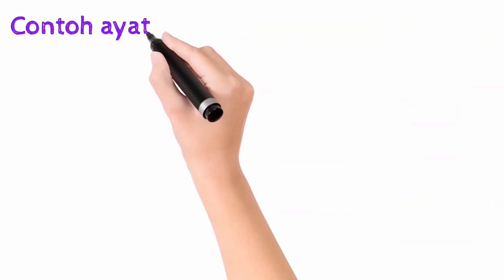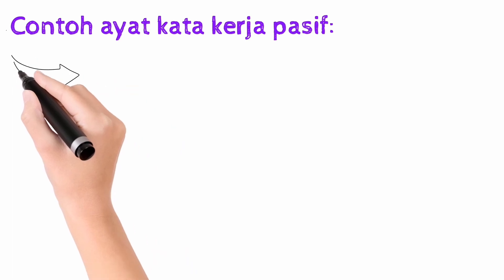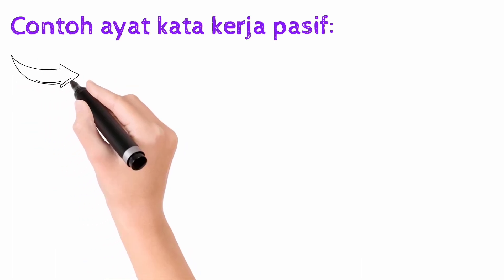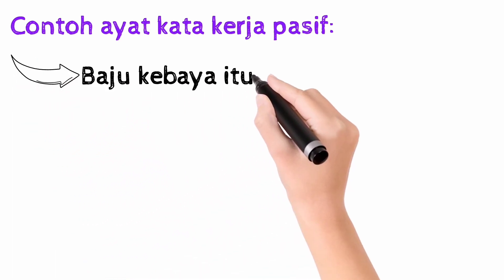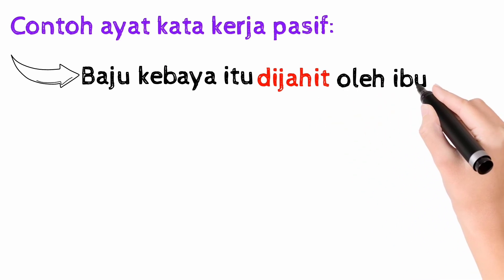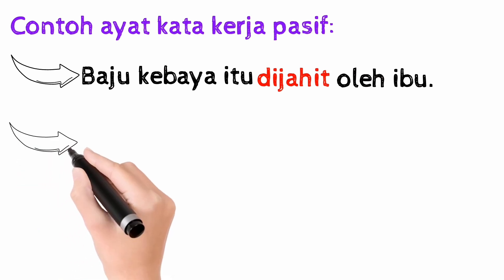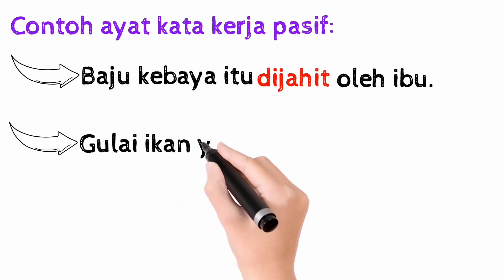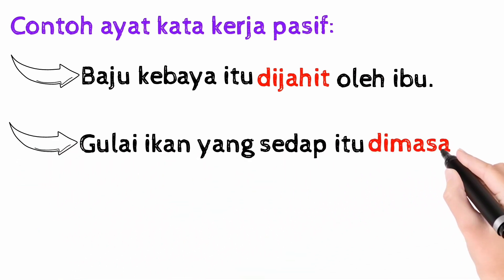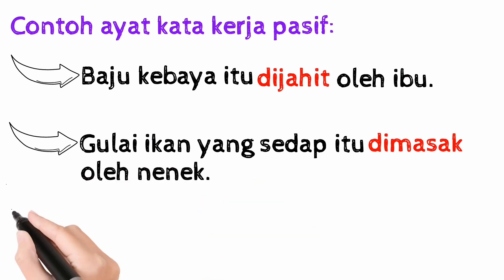Sekarang mari kita lihat contoh-contoh kata kerja pasif yang digunakan di dalam ayat. Contoh yang pertama adalah, baju kebaya itu dijahit oleh ibu. Kata kerja pasif yang digunakan di sini adalah dijahit. Contoh yang kedua, gulai ikan yang sedap itu dimasak oleh nenek. Kata kerja pasif yang digunakan adalah dimasak.